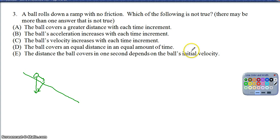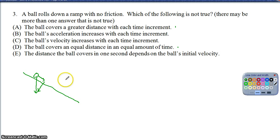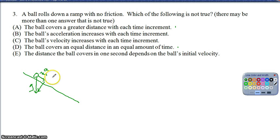Thinking in terms of vectors, part of gravity pulls the ball along the ramp and part pushes it into the ramp. Because gravity is constant, that component of acceleration along the ramp is also constant. So option B — that the ball's acceleration increases with time — is false. The acceleration will not increase with time because gravity accelerates objects at the same constant rate.